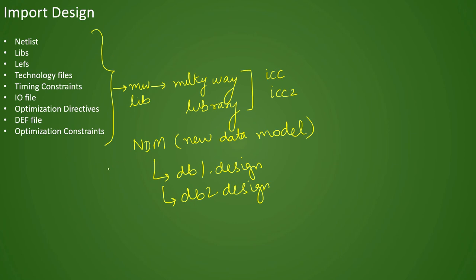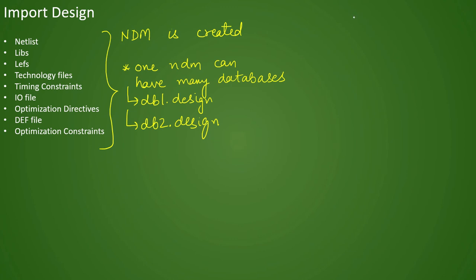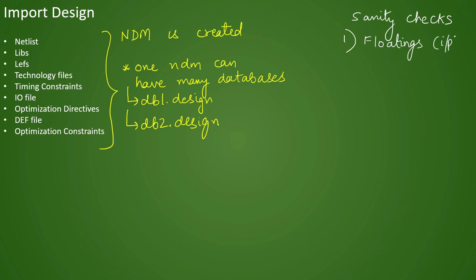Once your NDM is created, you perform sanity checks to ensure all inputs are correctly in place and there are no issues in the design. The first sanity check is related to floating pins — you cannot have floating pins, especially input floating pins, in your design. The second check is for unconstrained pins. If there are any unconstrained pins, we need to check with the RTL team or synthesis team whether the absence of delay on those pins is expected.